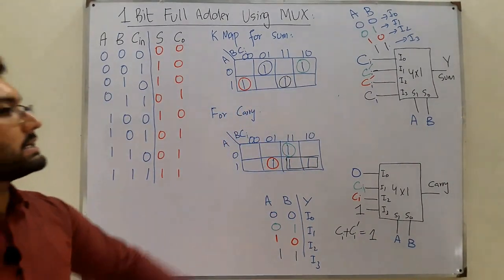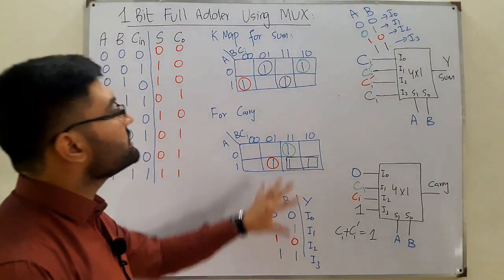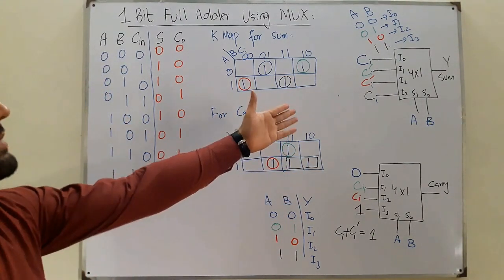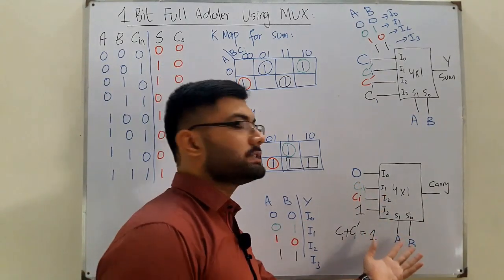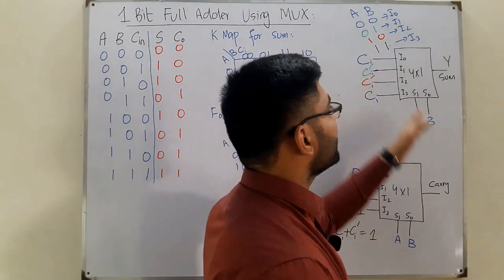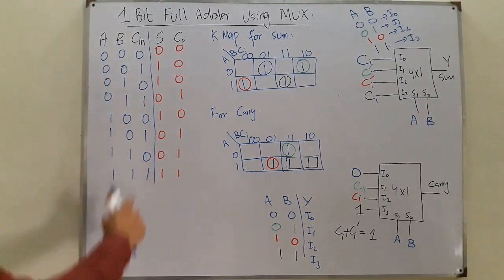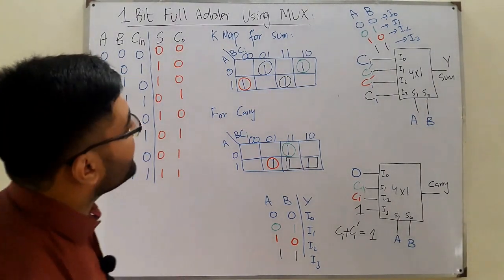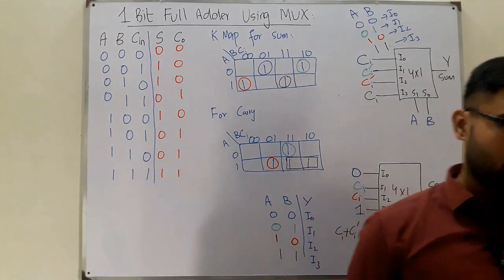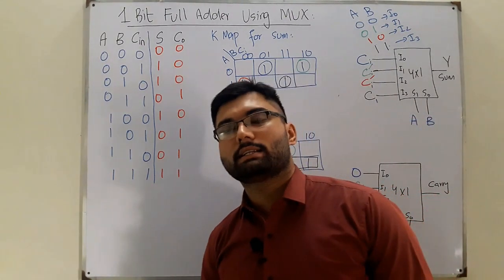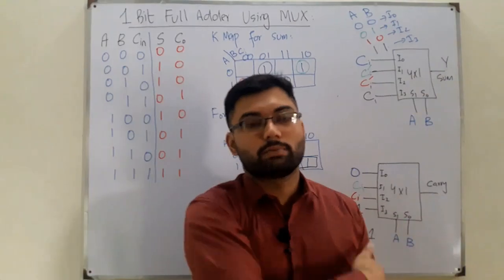So these are the two multiplexers: one for the sum and one for the carry. Through the select lines and these inputs, one gives you the carry and the other gives you the sum. That's all about today's lecture on the one-bit full adder using a multiplexer. See you in the next lecture — take care of yourself and everyone around you. Goodbye.